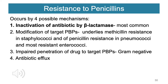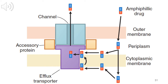There are four resistance patterns known for penicillin. The most common is inactivation by beta-lactamase. Second is modification of target penicillin-binding proteins (PBPs) — this underlies methicillin resistance in staphylococci and penicillin resistance in pneumococci and most resistant enterococci. Third is impaired penetration of drug to target PBPs in gram-negative organisms. Fourth is antibiotic efflux — when the drug crosses membranes, it faces an efflux transporter that expels it from inside to outside the bacteria.